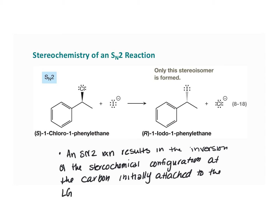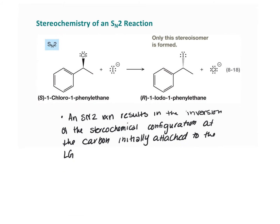What we're really saying here is: if you have something that's enantiomerically pure and you've got a chiral center, and it goes through an SN2 reaction at that chiral center forming a new chiral center, it's going to have the opposite stereochemistry. The stereoisomers produced depend on the exact stereoisomer that reacts. And so we say that an SN2 reaction is stereospecific — that's the term we use to describe this.